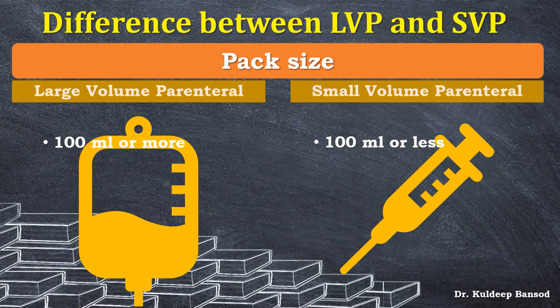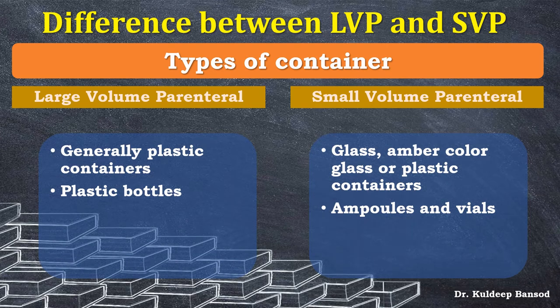The first difference between large volume parenteral and small volume parenteral is pack size. Large volume parenterals have a pack size of 100 ml or more, whereas small volume parenterals have a pack size of 100 ml or less. Another difference is the container: large volume parenterals generally use plastic bottles, as glass bottles — the older container type — were replaced due to their weight and brittleness. Small volume parenterals are packed in amber-colored glass or plastic containers such as ampoules and vials.